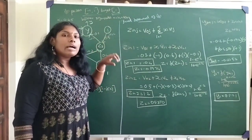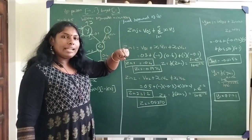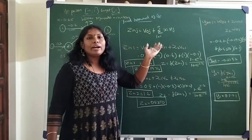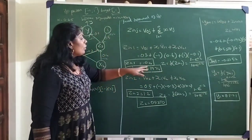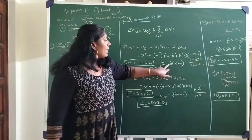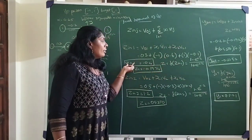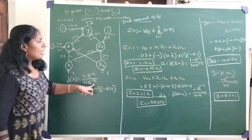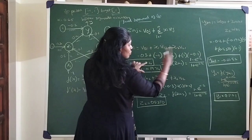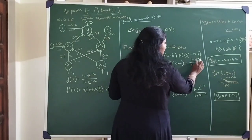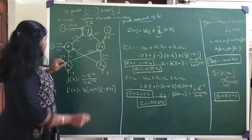Once z_in1 is computed as the summation, we apply the activation function to get the output z1. Using the bipolar formula: (1 minus e^0.4) / (1 plus e^0.4). This gives us the output of z1 after applying the activation function.